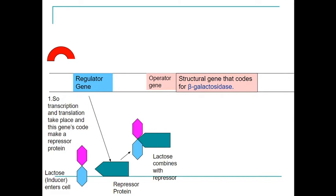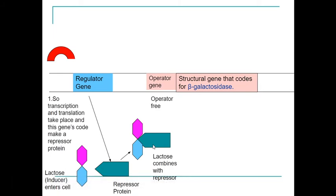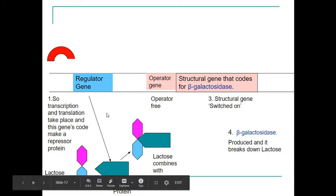The lactose combines with the repressor itself. Because the operator is free and the repressor has not bound to the operator, the RNA polymerase can actually read the whole entire strand. This means that the structural gene is turned on, and beta-galactosidase will be produced and will break down the lactose that is present in the cell.